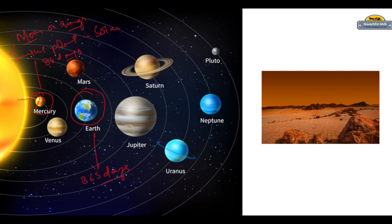Moving towards the next planet, Venus. Venus is the hottest planet in the solar system. Though Mercury is the closest planet to the sun, Venus is still the hottest planet. There must be some reasons for why Venus is the hottest planet in the solar system.